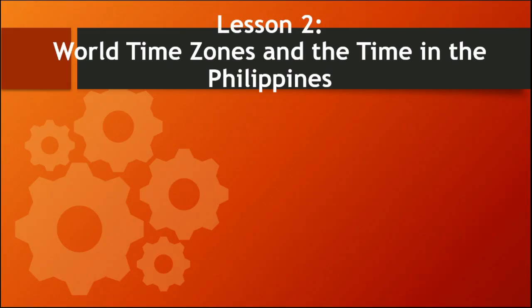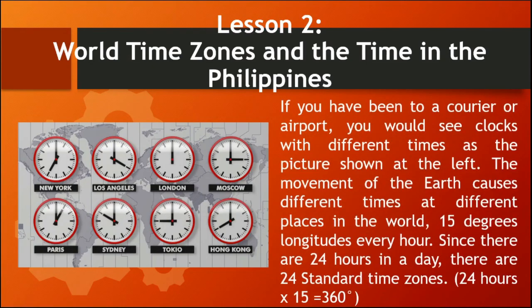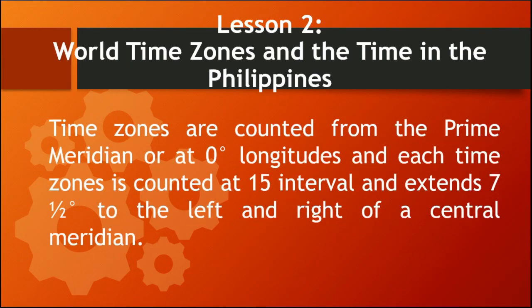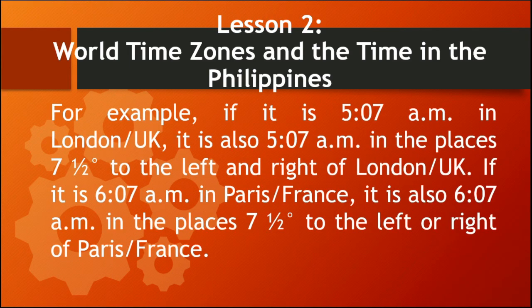Lesson 2: World Time Zones and the time in the Philippines. If you have been to a courier or airport, you will see clocks with different times, as shown in the picture. The movement of the Earth causes different times at different places in the world — 15 degrees of longitude per hour. Since there are 24 hours in a day, there are 24 standard time zones: 24 times 15 equals 360 degrees. Time zones are counted from the prime meridian at 0 degrees longitude. For example, if it is 5:07 AM in London, it is also 5:07 AM in places 7.5 degrees to the left and right of London.